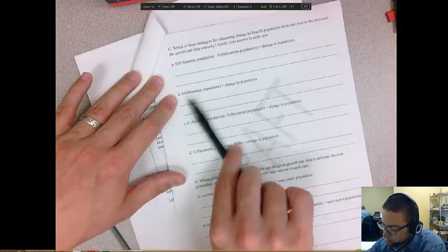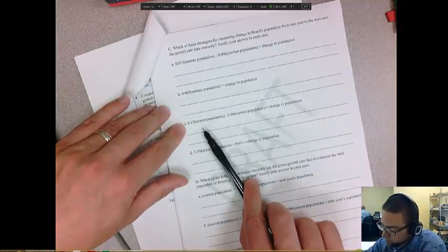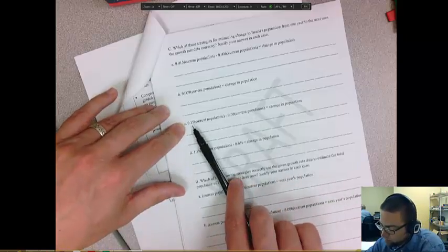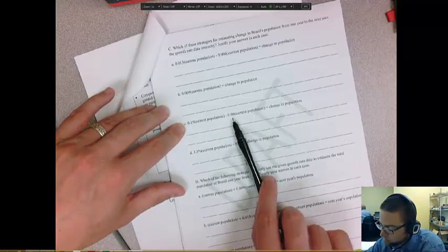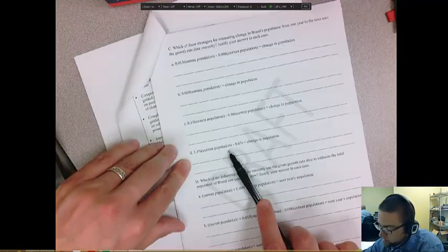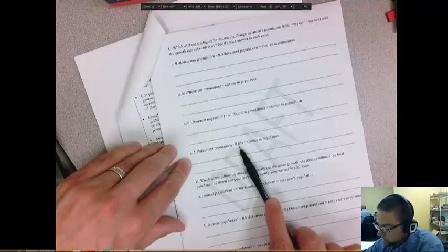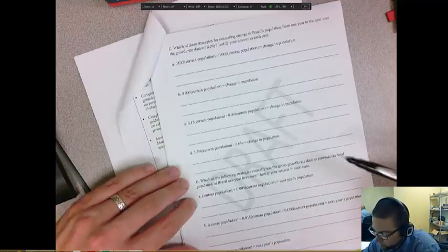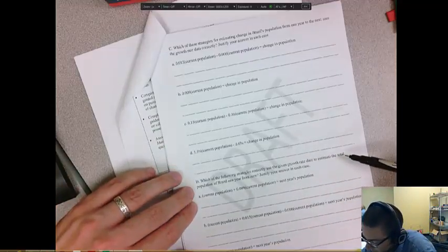So 1.5% times the population minus 0.06 times the population equals the change in population. So does that make sense? Is this also correct? Is this correct? 0.15 and 0.06 and then 1.5% times the current population minus 0.06% equals the change in population. So is that true? And I guess you do the same thing for these other ones.